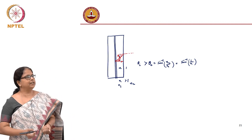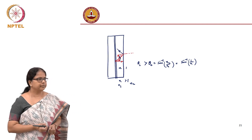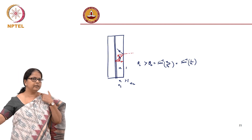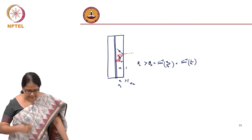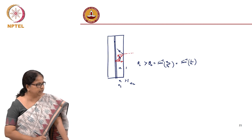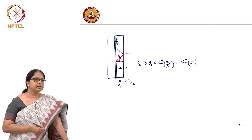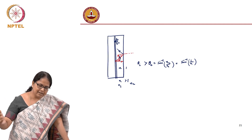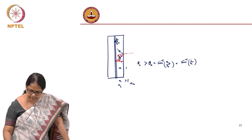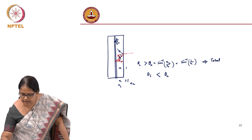Total internal reflection here means that the light that is emitted is completely reflected back into the system — it is not available at the output of your device. So it simply means that if I take a point emitter here, it may emit in all possible directions, but what is available outside is only that fraction which falls such that theta_i is less than theta_c. Theta_i greater than theta_c implies total internal reflection.